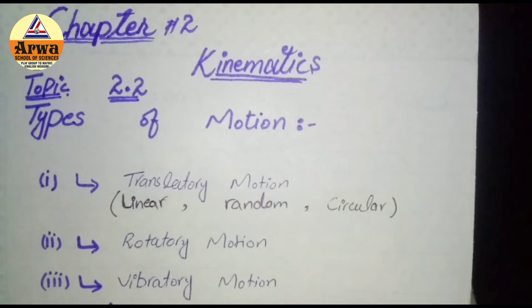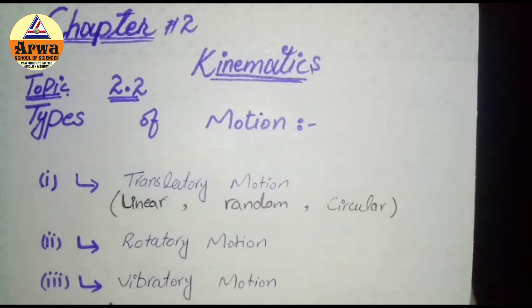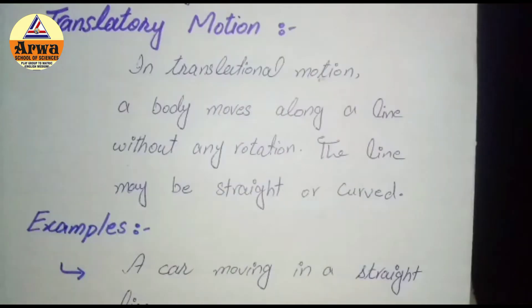Translatory motion ko aage three types mein divide kiya hai: that is linear motion, circular motion, and random motion.